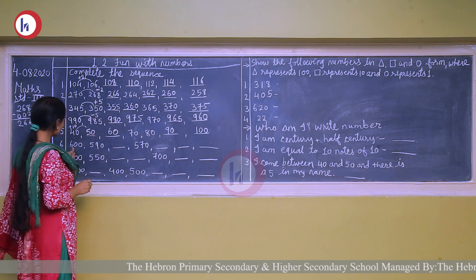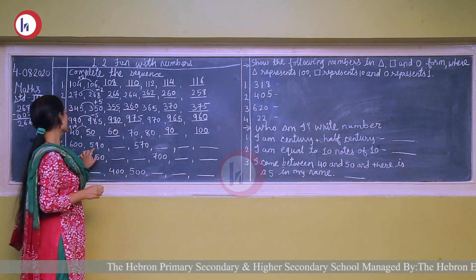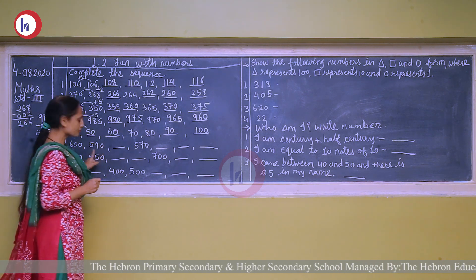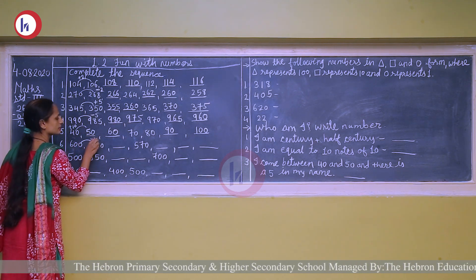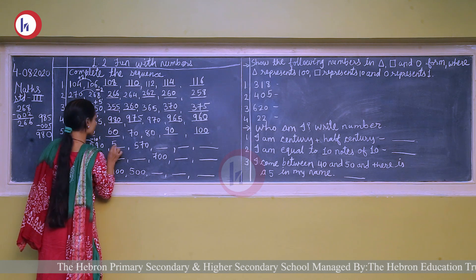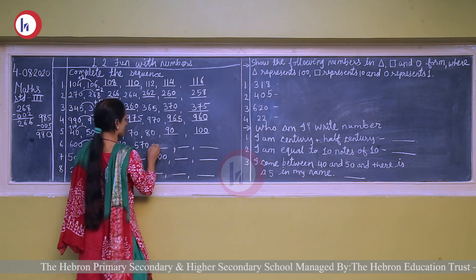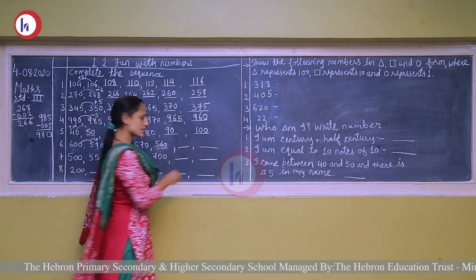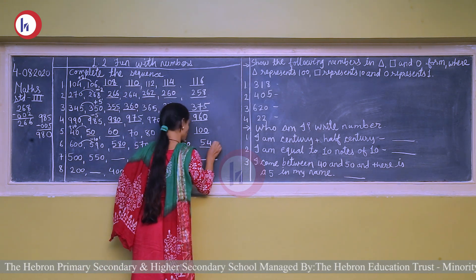Next: 600, 590, 570. Here again numbers are decreasing. We will find the difference: if we subtract 10 from 600, we get 590. So next: 590 minus 10 is 580. 580 minus 10 is 570. Again 570 minus 10 is 560. Minus 10 is 550. Again minus 10 is 540.